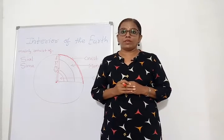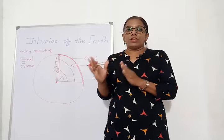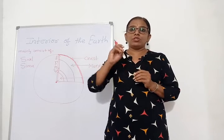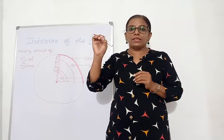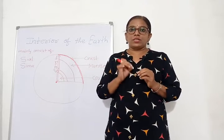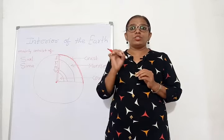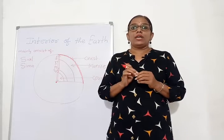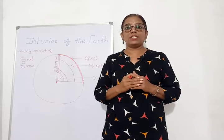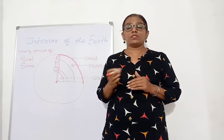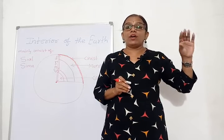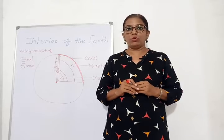Now, what is the width of the crust? If we compare our earth to an apple, just as an apple has a thin outer skin, similarly the earth has the crust on top — the thinnest layer. In some places it is up to 35 km thick, and in some places like the ocean floor it is only 5 km.